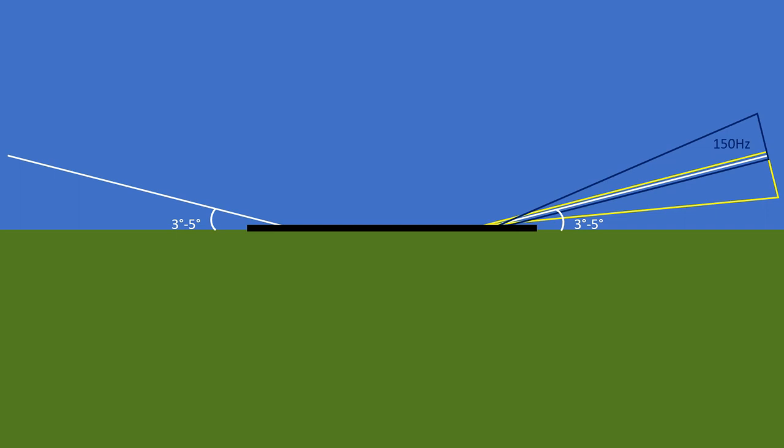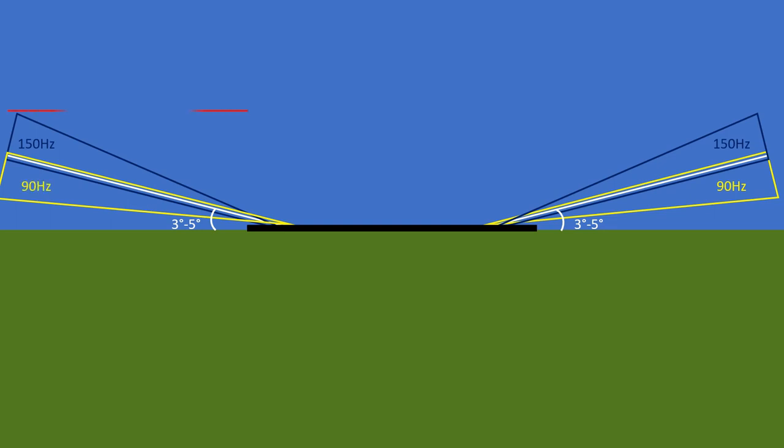The localizer radio waves extend approximately 10 nautical miles from the threshold of the runway. The other antenna is for the glide slope. Looking at the runway from a horizontal perspective, the glide slope lines represent the descent path, usually three to five degrees — typically three, maximum five. The glide slope antenna works the same way as the localizer: two lobes, 150 hertz on top and 90 hertz on the bottom, extending approximately 10 nautical miles from the threshold.